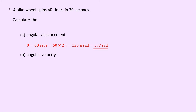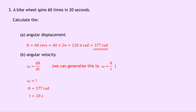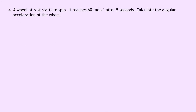For part B, to calculate the angular velocity we use the relationship omega equals d theta by dt, which we can generalise to omega equals theta over t. We know theta is 377 radians from part A, and the time is 20 seconds. Substituting in: omega equals 377 divided by 20, which gives 18.9 radians per second.